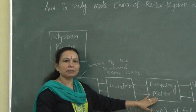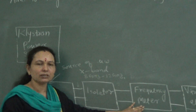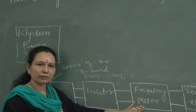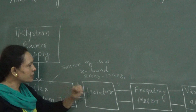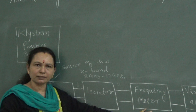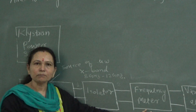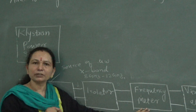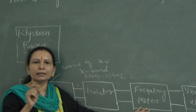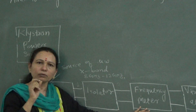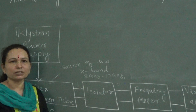After the isolator there is a variable frequency meter — a digital type — used for measurement of the frequency propagating through the klystron bench. This frequency meter operates from 8 GHz to 12 GHz. At any given time only a single frequency will propagate. To find that frequency, we tune the frequency meter in the clockwise direction and observe a dip on the CRO. Only at one frequency will you observe the dip, and that corresponding frequency is the frequency of operation.